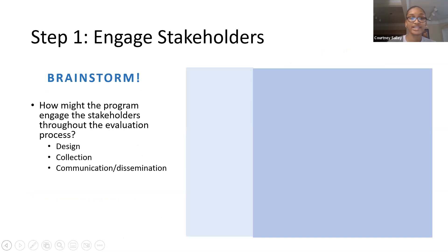We have a fun interactive piece — a brainstorming activity. Thinking back to our example and the key stakeholders that were identified, how might the program engage those stakeholders throughout the evaluation process? During the design process, data collection, and at the end during communication and dissemination. We're going to do a waterfall chat activity: type your response in the chat, but don't click enter or submit until I give a signal.